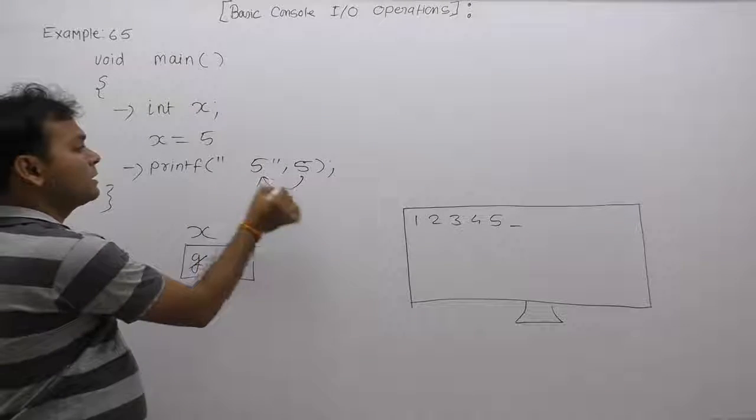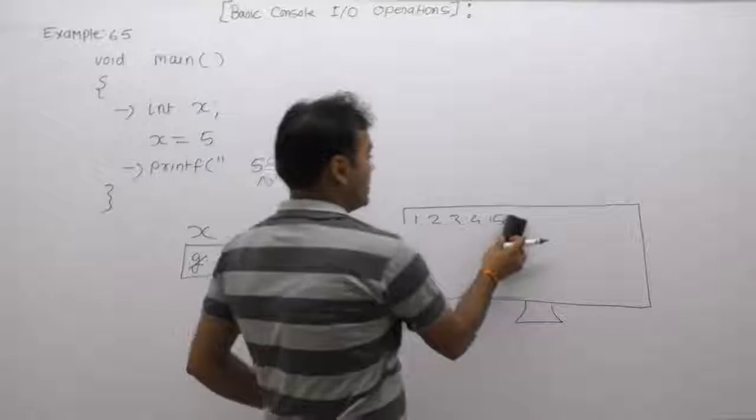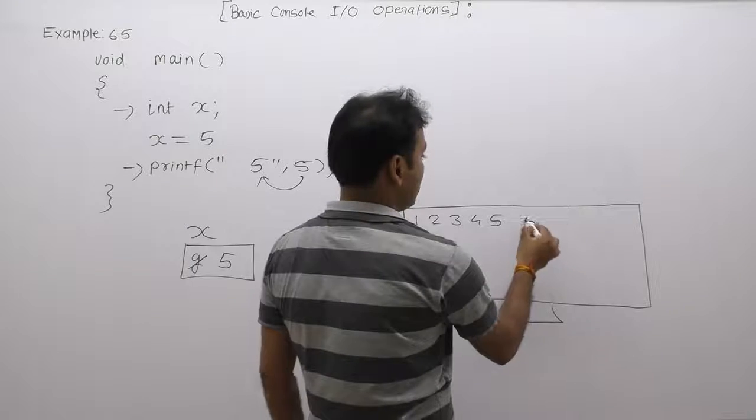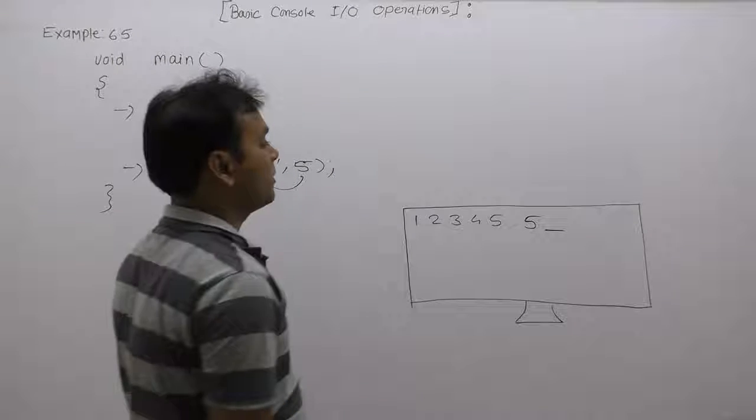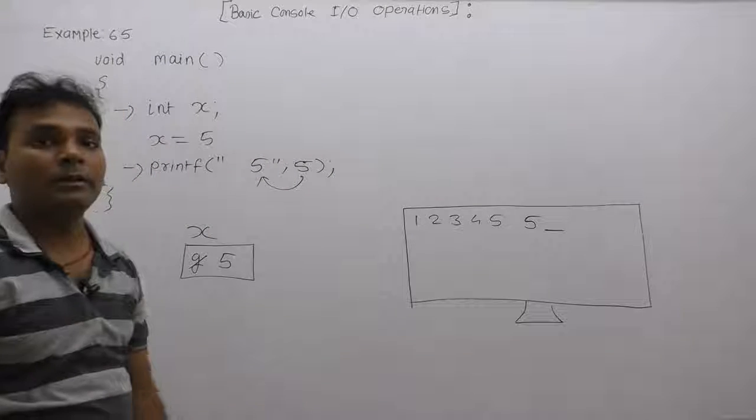Space 5, therefore it will display a space then 5. This is the current position of the cursor. This is the final result of the given two rounds.